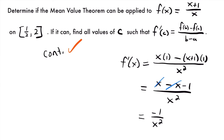Now let's check to see if this derivative is continuous on this given interval. What value of x is going to give us 0 in the denominator? If we set x squared equal to 0, we get x equals 0. And just like the original function, that doesn't matter because 0 is not on our interval. So we can say that because the derivative is continuous on our interval, the original function is differentiable on that interval. So differentiability is good. Now let's apply the mean value theorem by calculating the slope between our two endpoints.